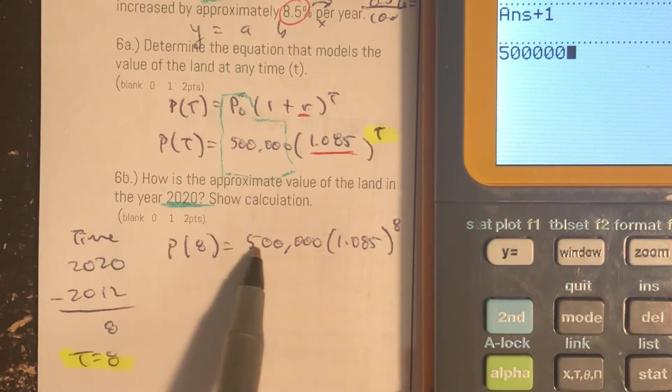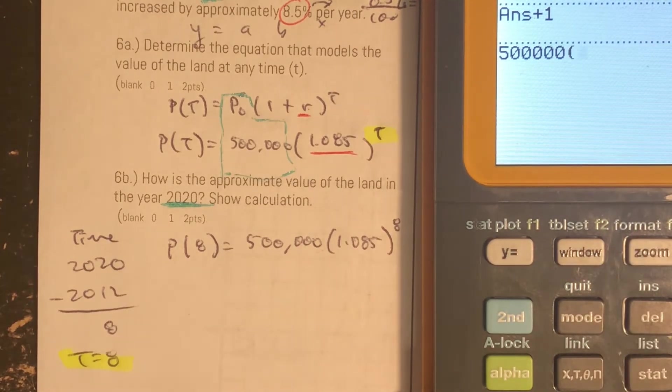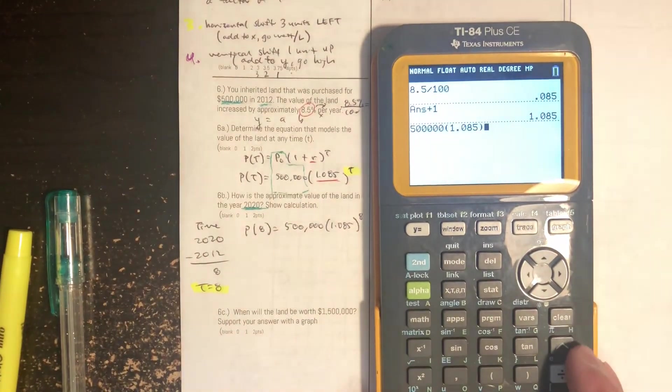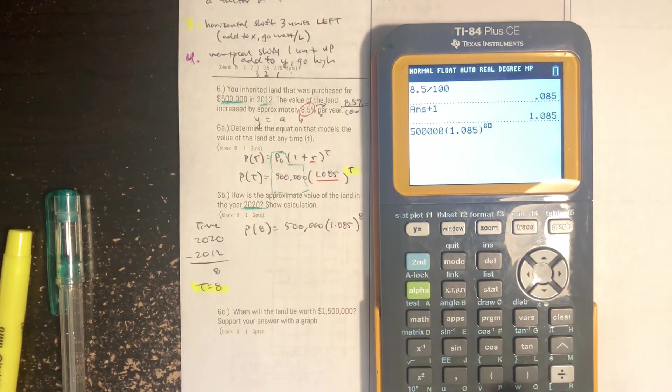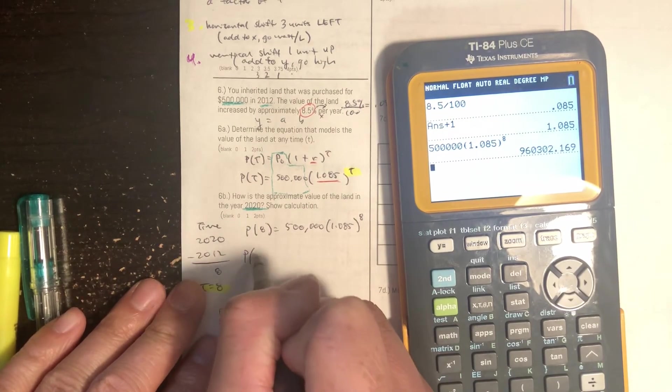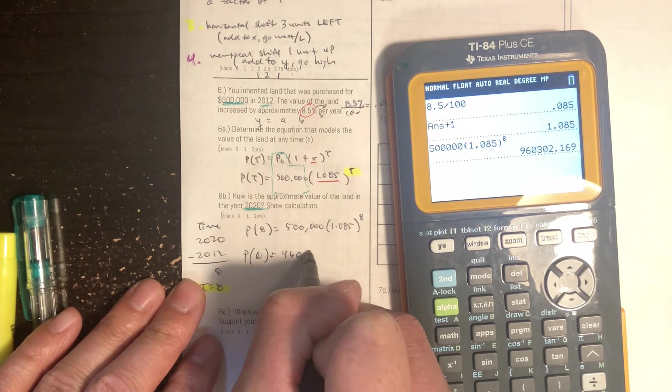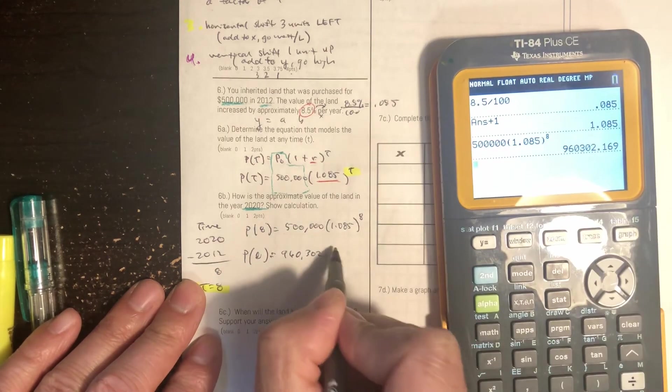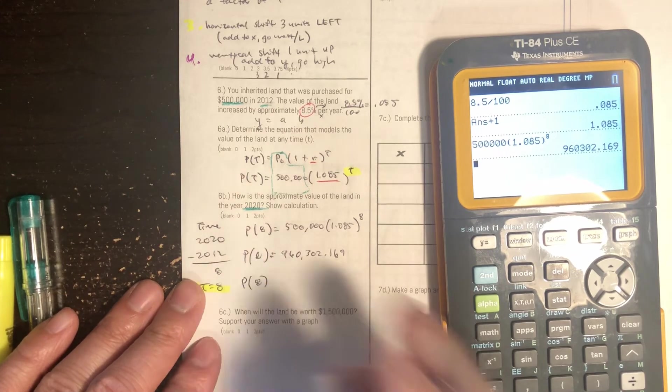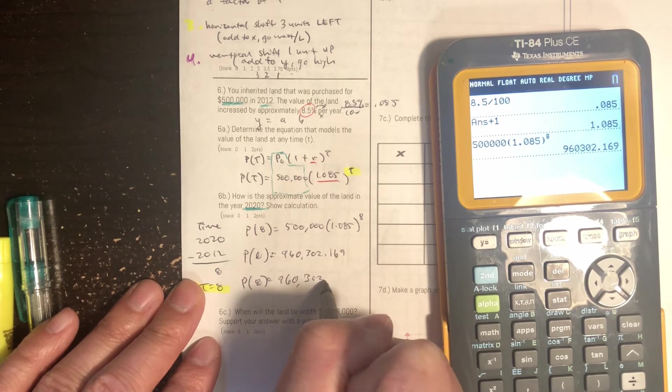What is our population or profit or price after 8 years starting at 500,000, 1.085 to the 8th power. There's my calculator rate equation. Let's put it into our calculators. Remember there's no comma so you can double check you have the right number of zeros. 1.085 to the 8th power. And then P(8) equals 960,302.169. So we can say approximately in the year 2020 that the price of the land is $960,302.17.